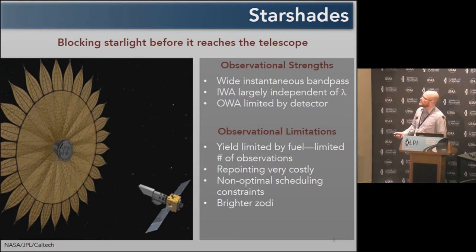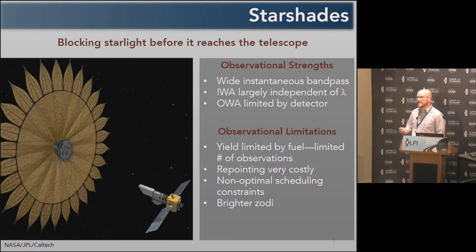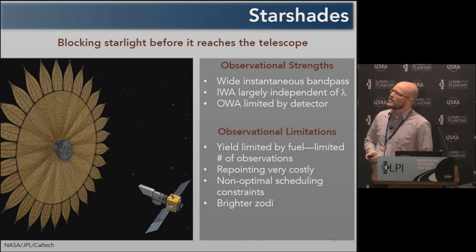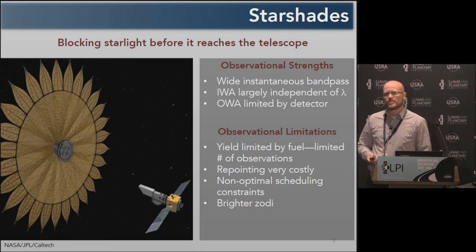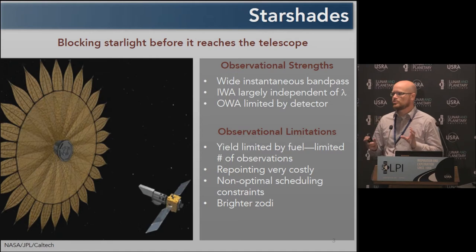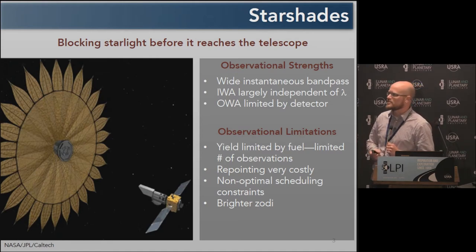Starshades are advantageous because you can design them to have a very wide bandpass, so we can get very wide spectral coverage in one go. Also, their inner and outer working angles are independent of wavelength, so if we see a planet in that dark zone, we'll be able to observe it at all of those wavelengths for which the starshade is designed, unlike a coronagraph.